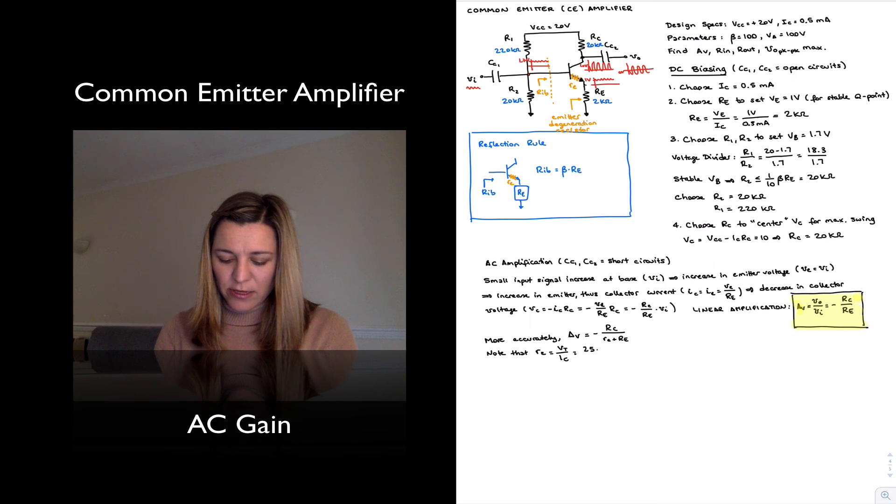And it's a parameter that is dependent on temperature because the thermal voltage is dependent on temperature. In this case, we can calculate it as 25 millivolts for the thermal voltage. That's the value of the thermal voltage at room temperature divided by 0.5 milliamps for the current, or 50 ohms.